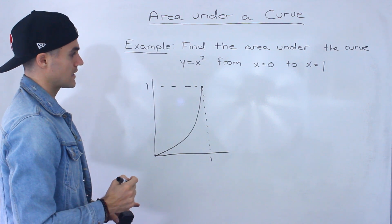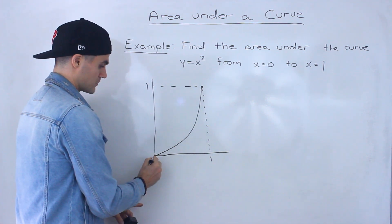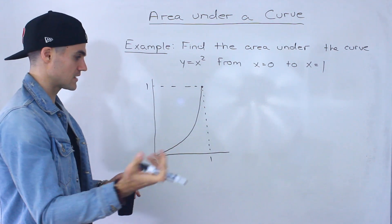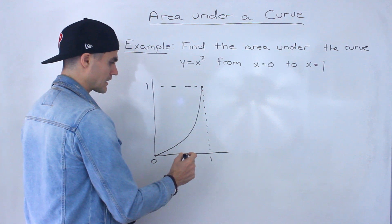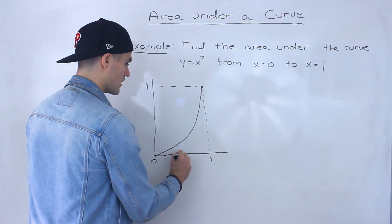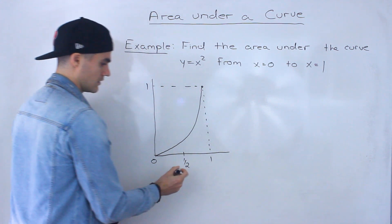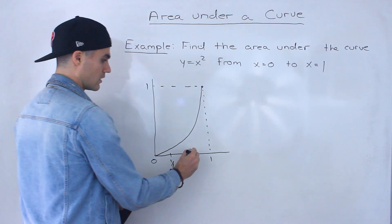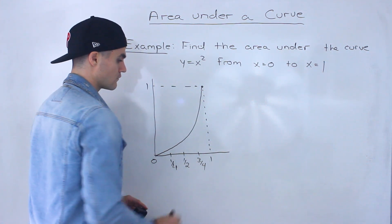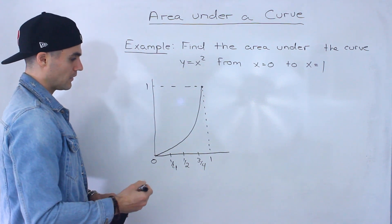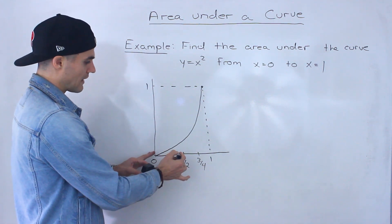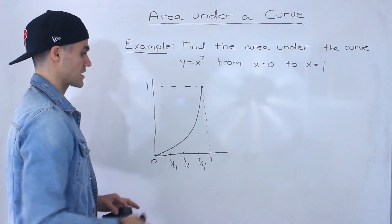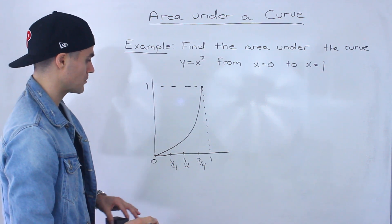The way to approximate it is to split this interval from 0 to 1 into separate subintervals — you can pick any number. Let's pick four intervals to start with. Splitting this up, we'll have x values at 1/4, 1/2, and 3/4. What we want to do now is find the area of these subintervals and add all those areas together. The question is how do we approximate them?